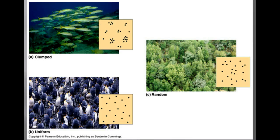Now let's look at some patterns of dispersion. Most of these patterns are influenced by environmental and social factors. There are three types: clumped, random, and uniform. Clumping is most common — individuals aggregate in patches and may be influenced by resource availability and behavior. You can see a picture of clumping here, as well as an artist's rendition of it.